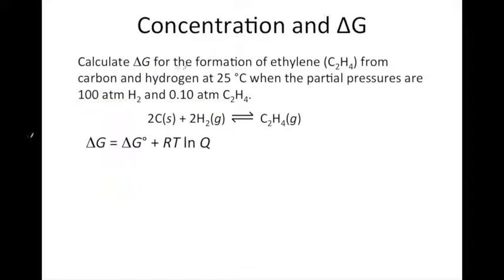Okay. So for this one, we want to use our equation that will allow us to solve for delta G non-standard. And so let's start by calculating Q. Q is going to be the partial pressures of our products over reactants.